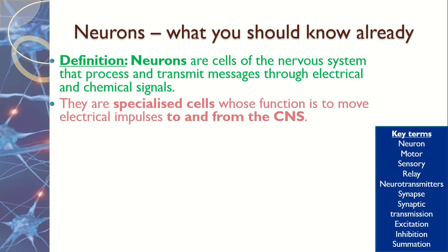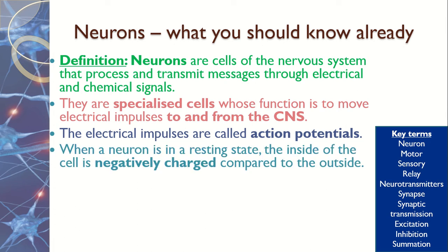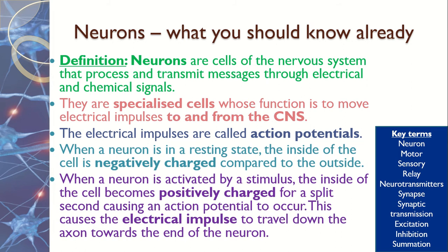First of all, you need to know what a neuron is. They are nervous cells that pass messages around your brain and to and from the central nervous system. What they do is send electrical impulses along the neuron, called action potentials. The electrical impulse basically pushes the message along the neuron so it has the energy to move along it. Neurons can be positively or negatively charged.